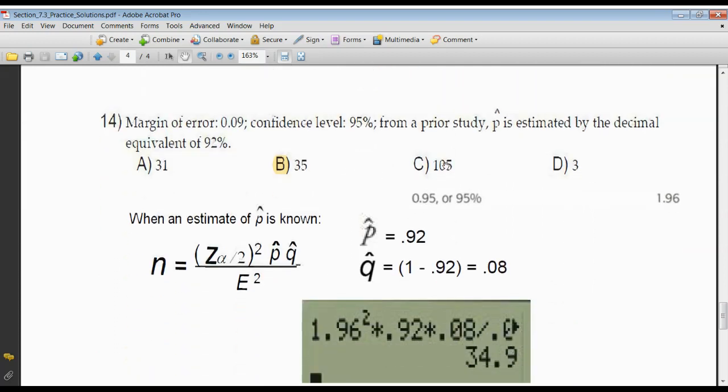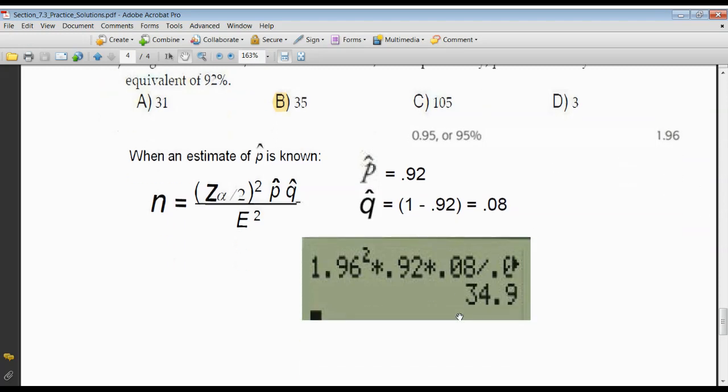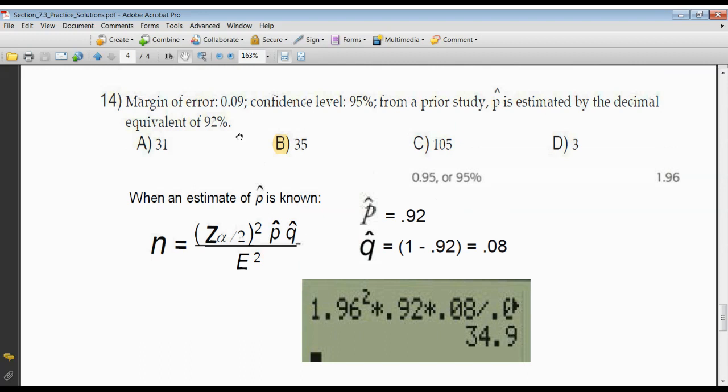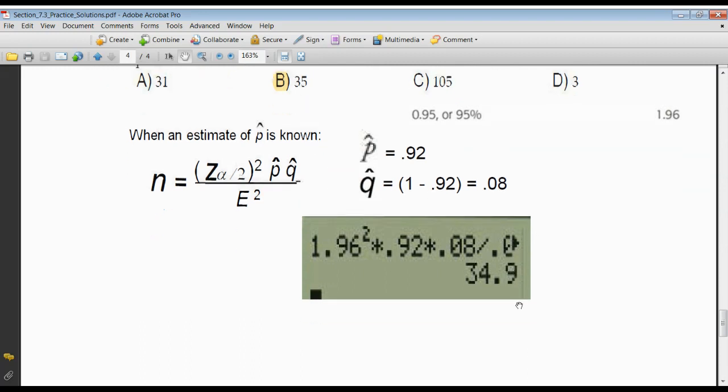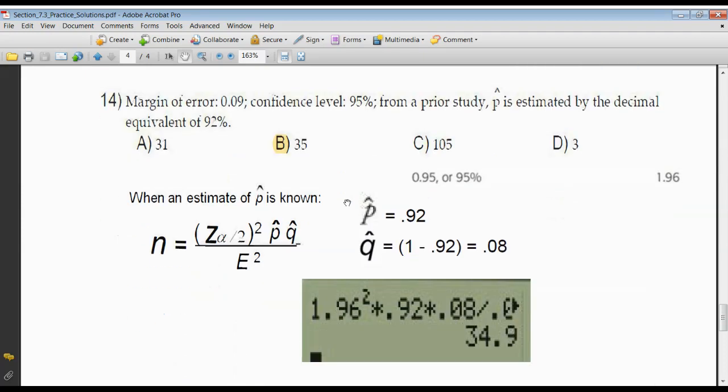Once again, 14. We still know P hat is given to us as 0.92, or 92%. We're looking for a 95% confidence level. Z score is 1.96. So, 1.96 in place of Z score, I'm squaring that. P hat is 0.92. Q hat is 1 minus that, 0.08. There it is right there. Divided by your E, your error squared. And your error in this case was 0.09. You just can't see it off to the side. 34.9 rounded up is 35. And that is that. I hope that helps.